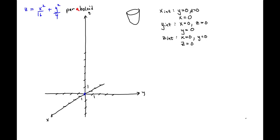So let's use a tool at our disposal to help us recognize we are dealing with a paraboloid. That tool is called the trace. A trace is given by the line of intersection between a plane that's parallel to one of the coordinate axes and the surface which it intercepts.